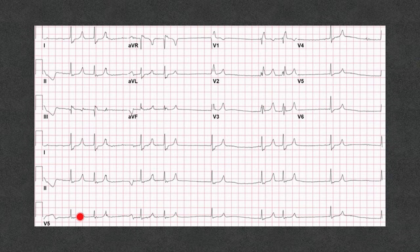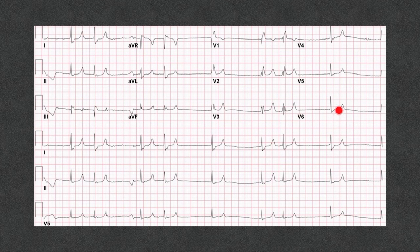This next EKG also shows no recognizable P waves. The QRS remains narrow and there is group beating. You can see sharp peaked T waves — they may not be tall, but compared to the QRS, they are clearly peaked. This is again hyperkalemia until proven otherwise. Initiate treatment immediately; don't wait for the potassium level. The potassium for this patient was 8.2.